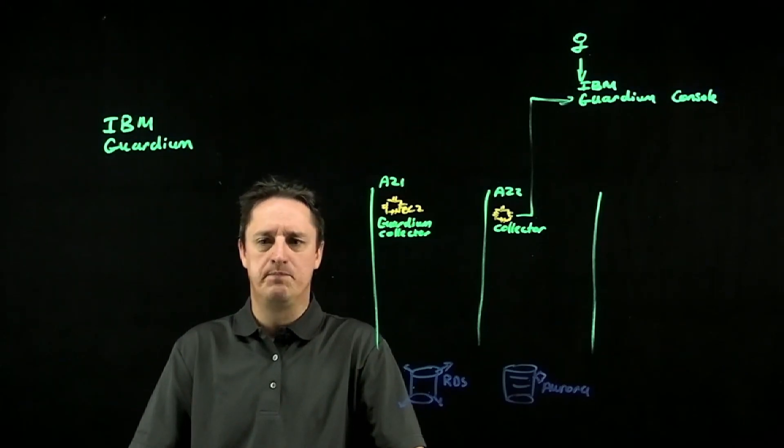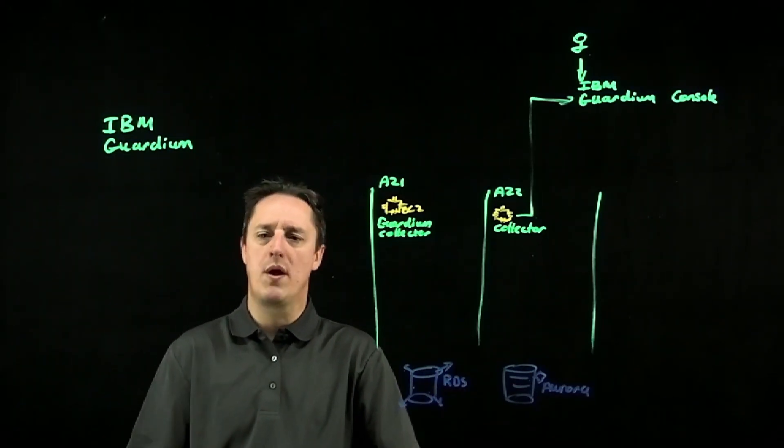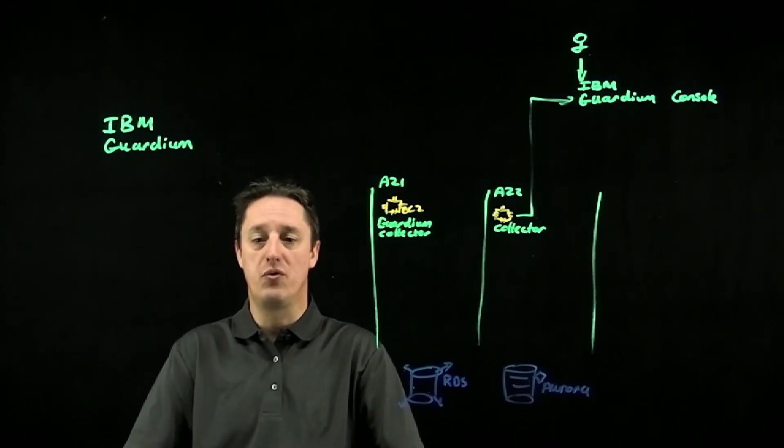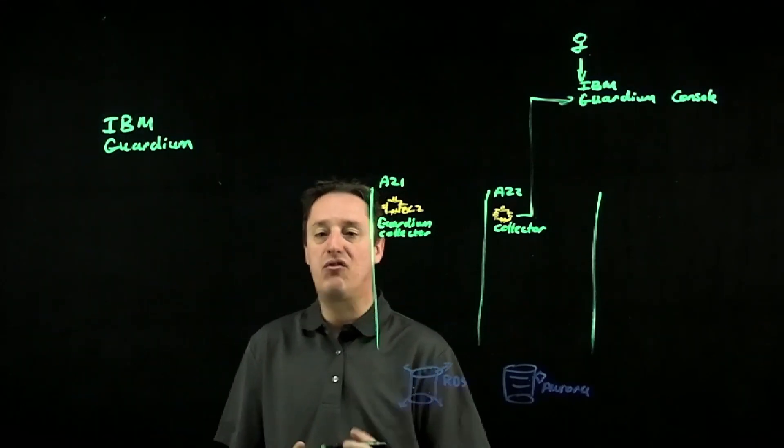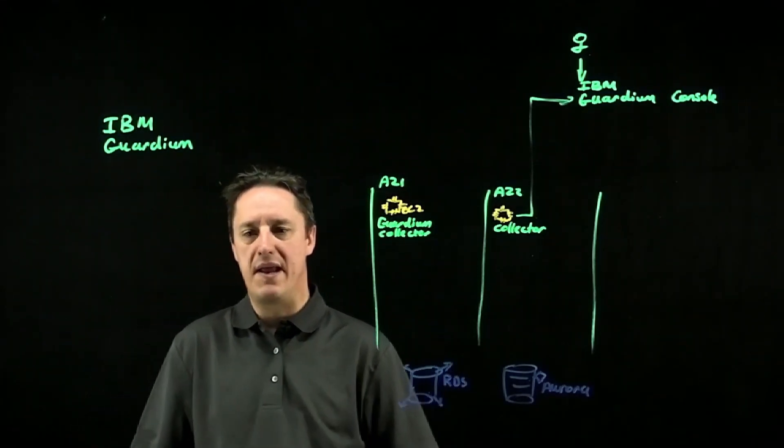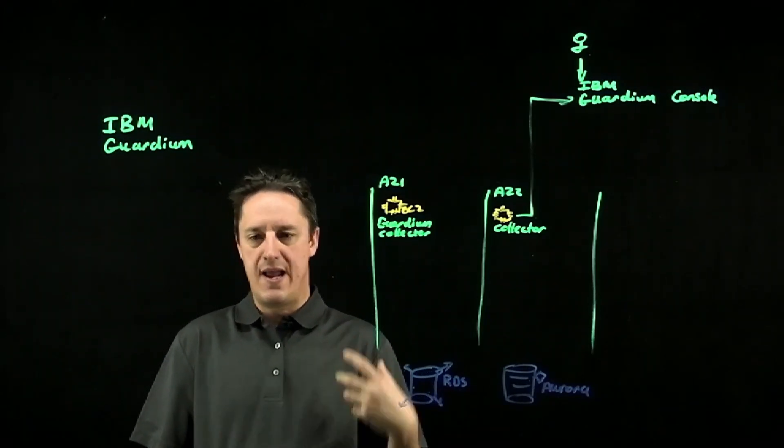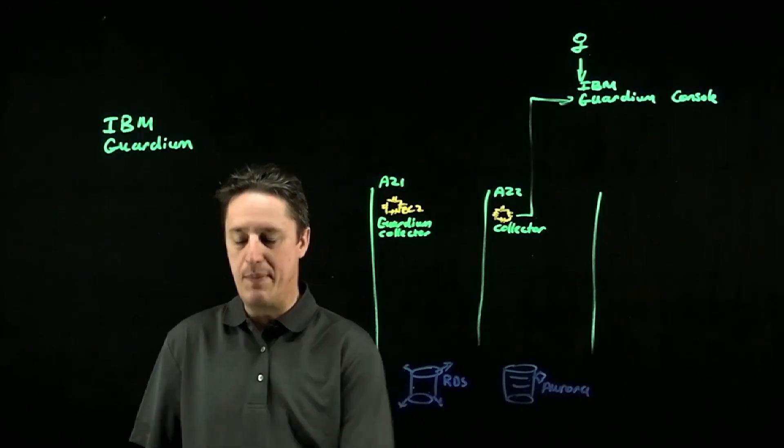However, from an RDS and Aurora perspective, we can't deploy the agents required for Guardium directly onto the database level. So what we're going to do is take advantage of an external STAP connector. We're going to run the agent process externally to the database on another compute layer, and then have it connect back to the database.